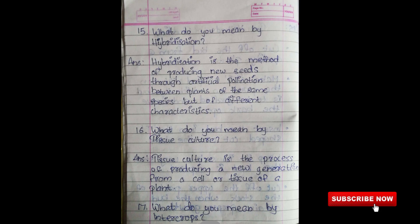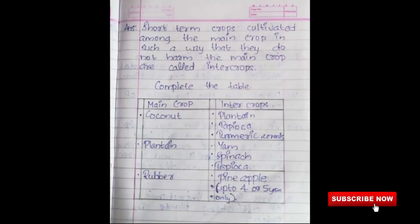Seventeenth question: What do you mean by intercrops? Answer: Short-term crops cultivated among the main crop in such a way that they do not harm the main crop are called intercrops. Table — main crop coconut, intercrops: plantain, tapioca, turmeric, and cereals. Main crop plantain, intercrops: young spinach, tapioca. Main crop rubber, intercrops: up to 4 or 5 only.